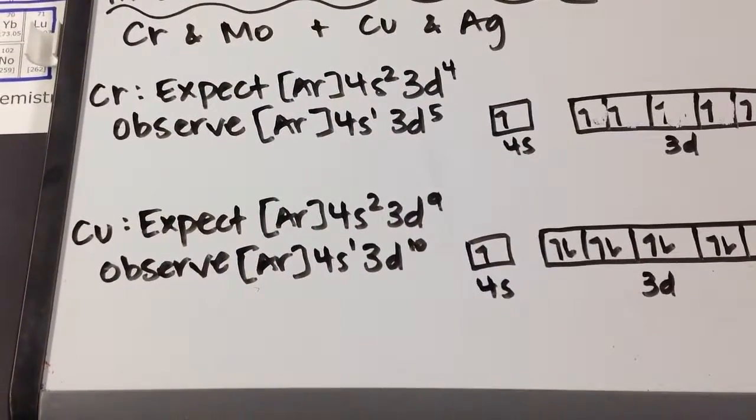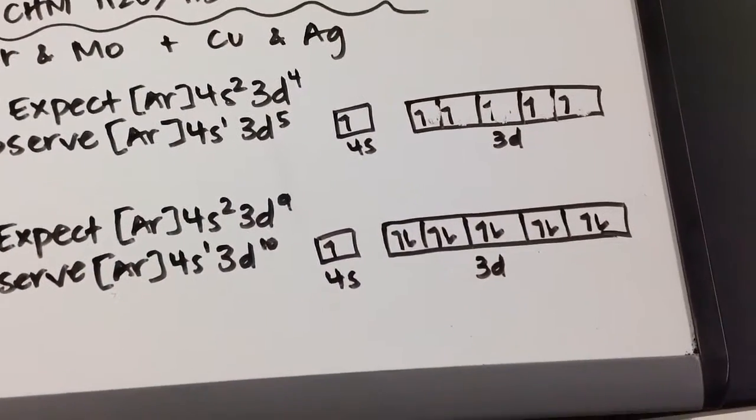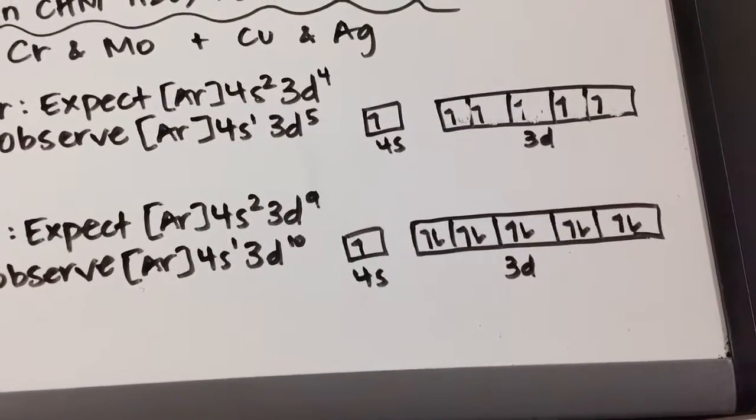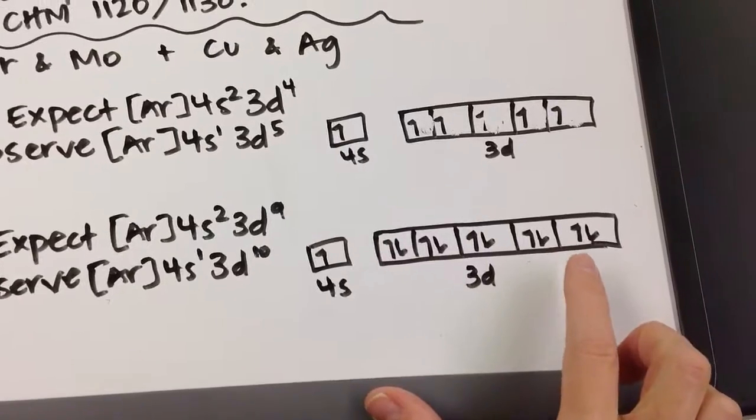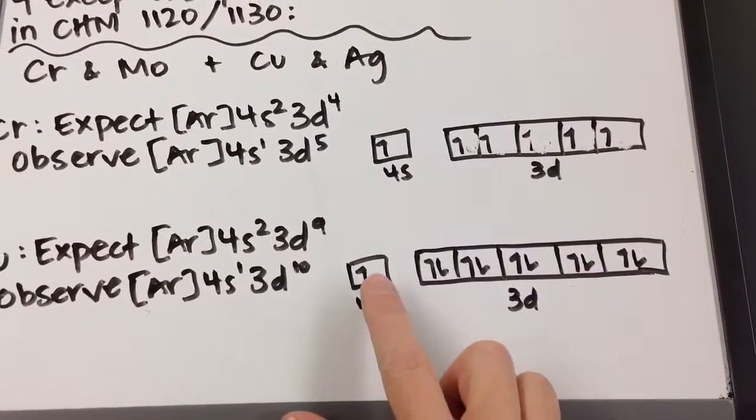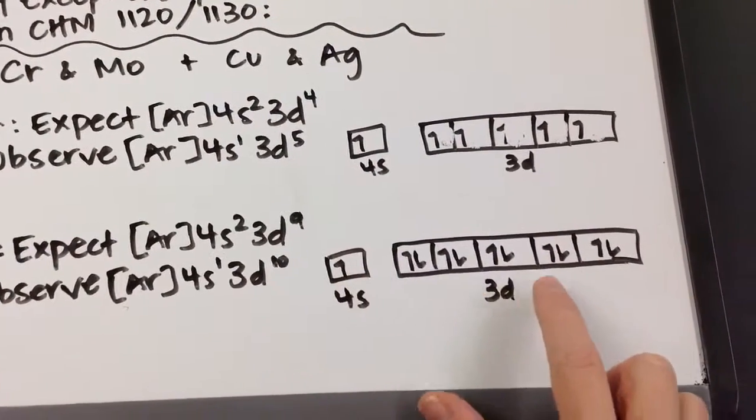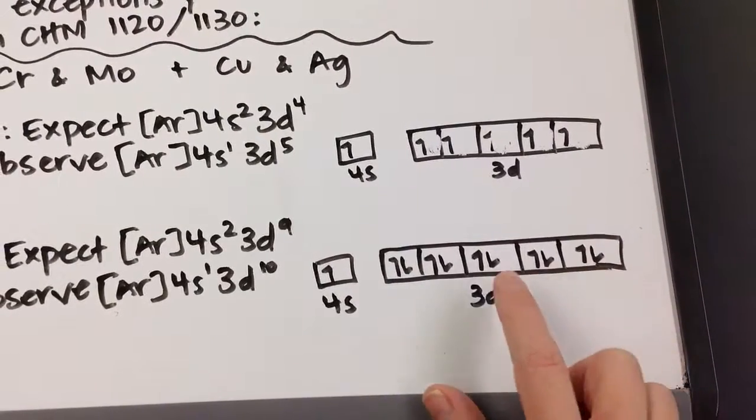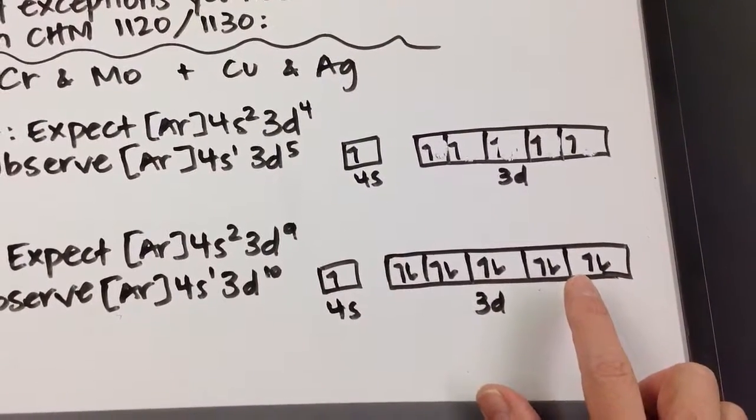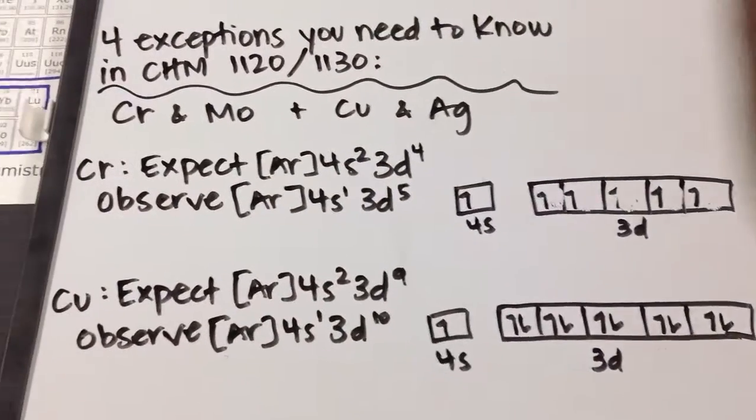But what you observe is 4S1, 3D10. And again, the answer comes from quantum mechanics. It's more stable to have the D-block completely filled, as opposed to one away from being filled. So one of these electrons from 4S becomes stolen by the D-block, and that gives the D-block a completely filled configuration, which is more stable from a quantum mechanical perspective.